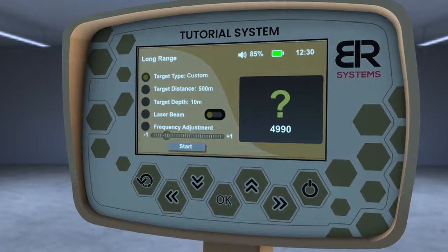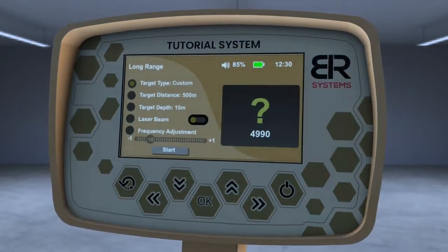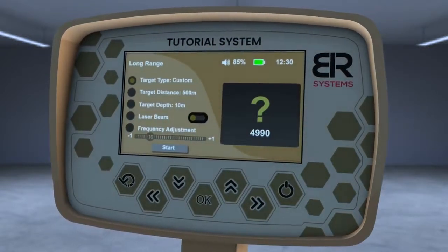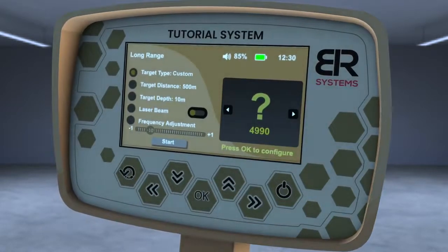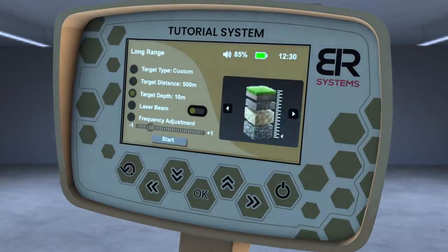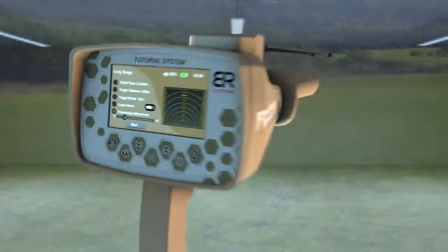The user must change the setting and save it when he gets the strongest response from the buried sample. Then select the target front distance, depth, frequency and follow the previous steps in the search process.